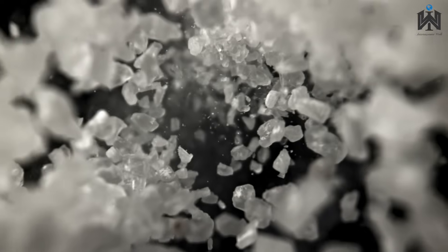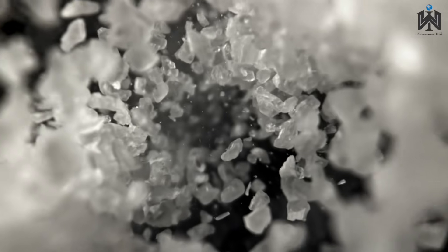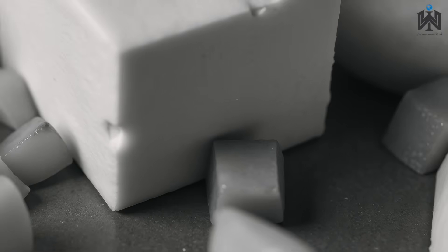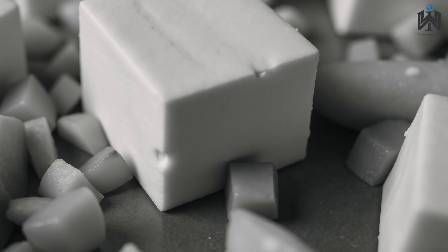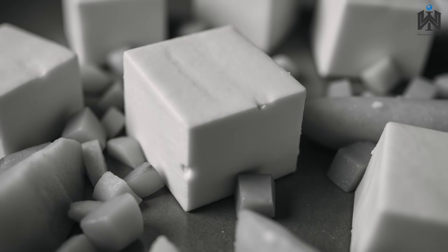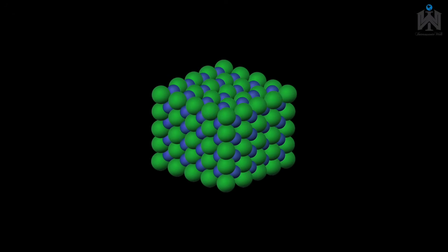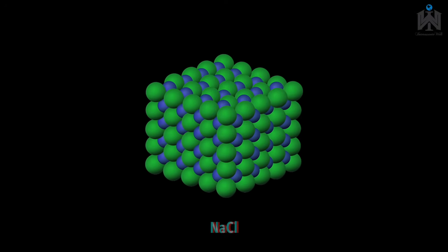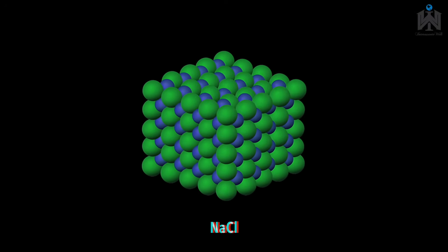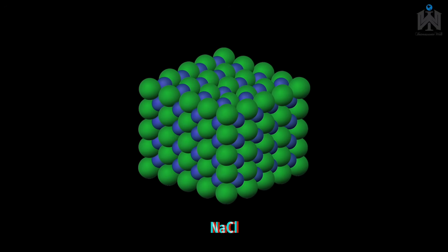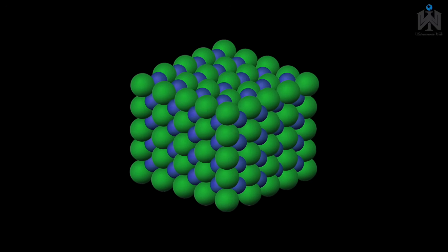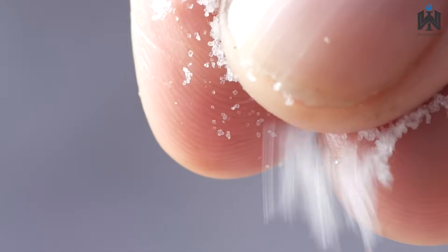Hast du schon mal genauer über Salz nachgedacht? Unter dem Mikroskop sieht man auf dem ersten Blick mehr oder weniger eine würfelförmige Struktur. Wenn man noch weiter ranzoomt, immer weiter kleinere Würfel. Das kommt daher, dass Salz am Ende des Tages eine ganz einfache chemische Formel ist: Natriumchlorid. Der Würfel der chemischen Verbindung besteht an den Ecken aus dem Metall Natrium und dem Gas Chlor. Zusammen bilden sie immer Würfel – das ist das Salz.